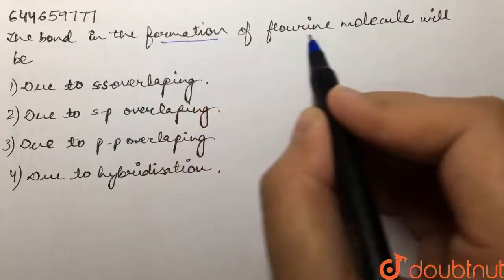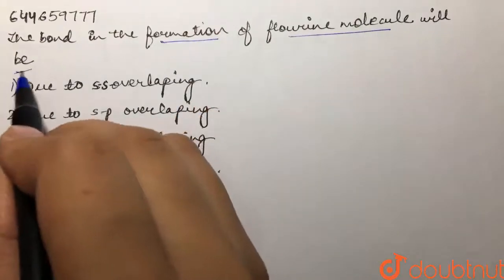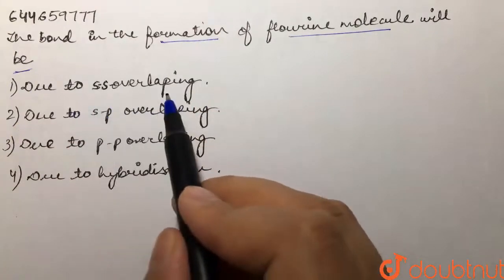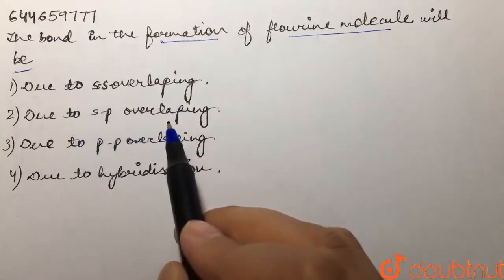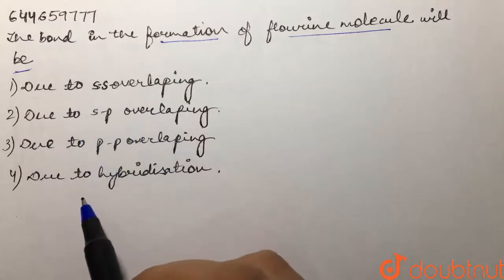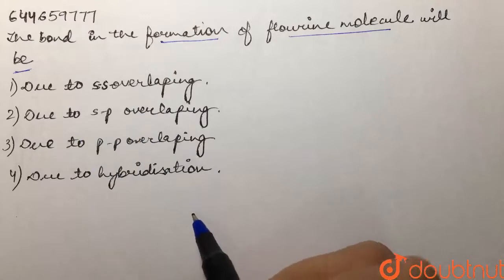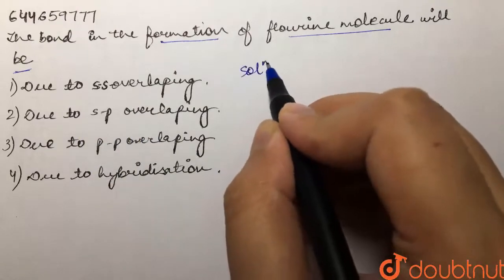The formation of fluorine molecule will be what? First is due to SS overlapping, then it is due to SP overlapping, then due to PP overlapping, and due to hybridization. Now over here we are supposed to tell that the bond formation of fluorine molecule, that is F2 molecule, will be what.